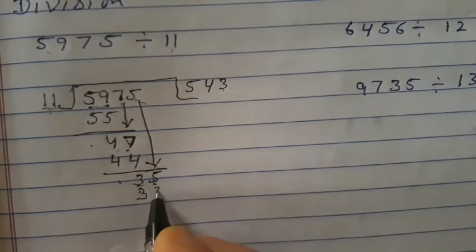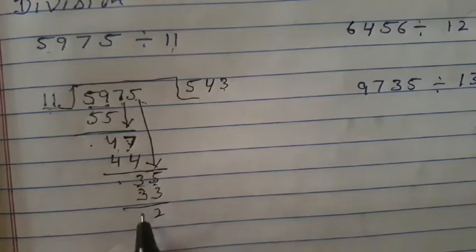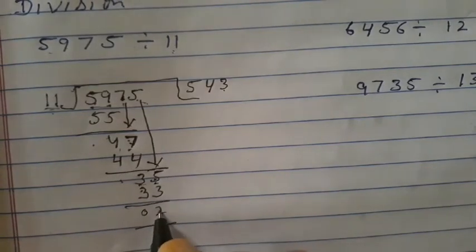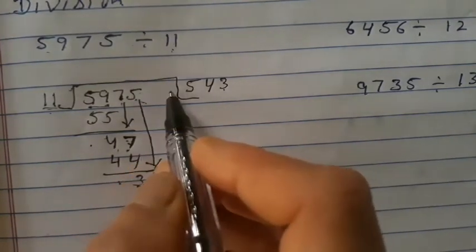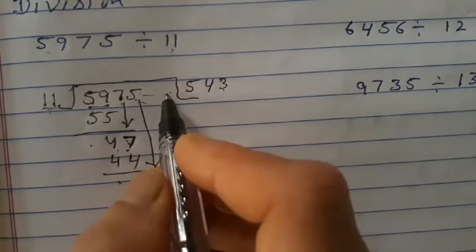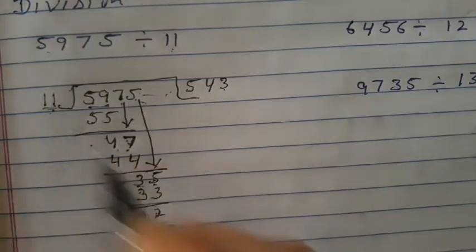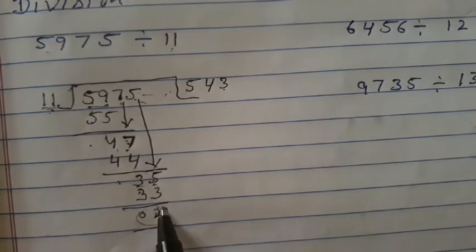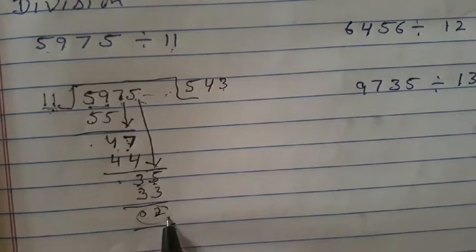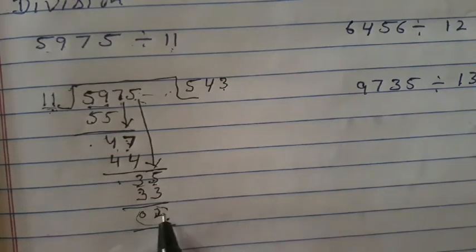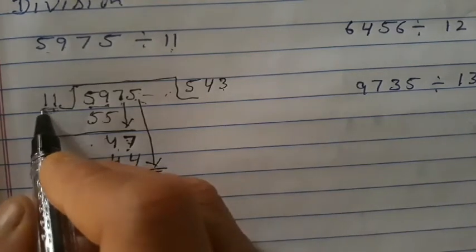Now 5 minus 3 is equal to 2. Now we have taken all the digits. Nothing is left here. Now look here: 2 is less than 11. This number is less than 11, therefore this is the remainder. Here you will stop the division process.